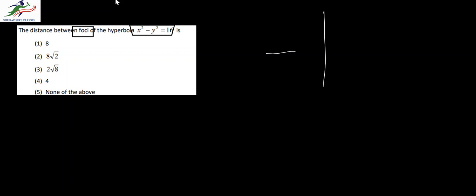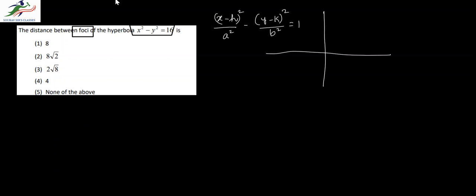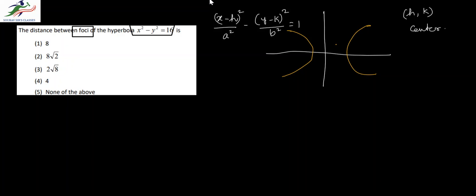In the next question we are asked to find the distance between the foci of the hyperbola x² - y² = 16. Before we get into that, we need to understand the concept of foci. In general, if we have a hyperbola defined by (x - h)²/a² - (y - k)²/b² = 1, then the point (h, k) is the center of the hyperbola.